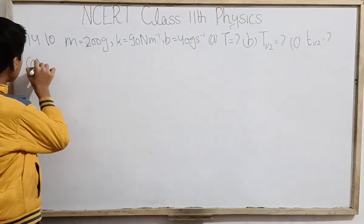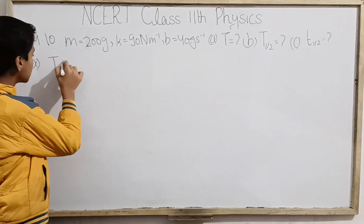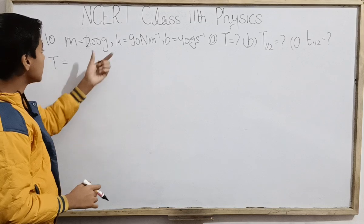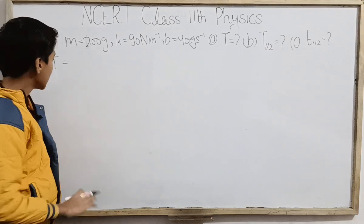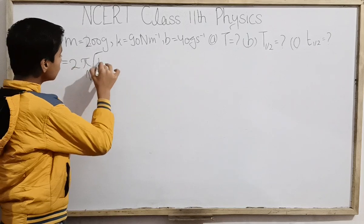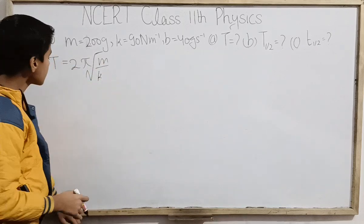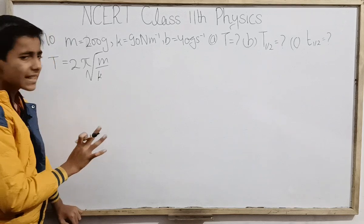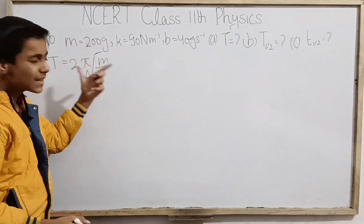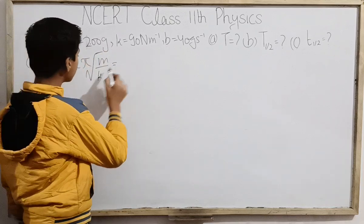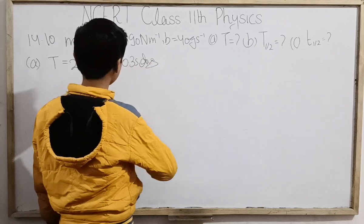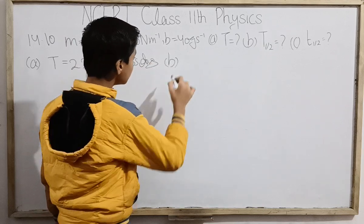For part (a), time period of oscillation: b is very much smaller in comparison to root k/m, so we can use T = 2π√(m/k) approximately, although it will be only approximate. But b is really much smaller than square root of k/m, so solving this we get T = 0.3 seconds.